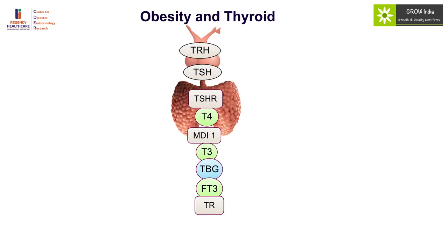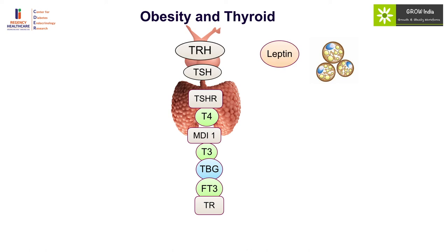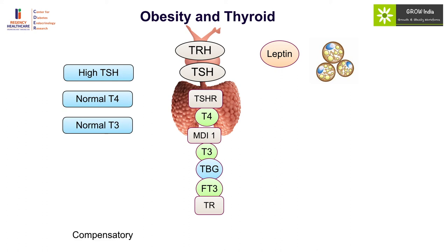Obesity has a vital link with thyroid hormone. As obesity increases and leptin levels rise, it activates TRH — thyrotropin-releasing hormone — which increases TSH, probably aiming to increase resting energy expenditure and reduce adiposity. However, this mechanism does not proceed further and there is no increase in thyroxine. Obesity is therefore associated with mildly elevated TSH levels of up to 6–8 with normal T4 and T3. This is a compensatory response — it is the effect of obesity, not the cause — it is reversible, and no treatment is required for marginal thyroid dysfunction in obesity.